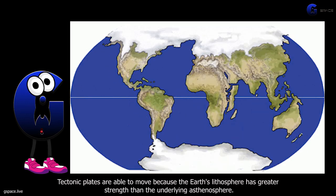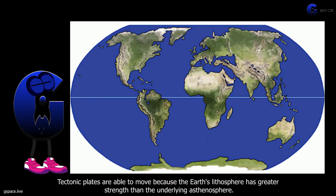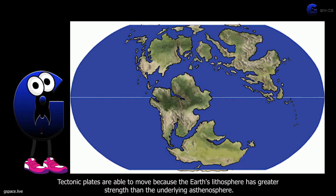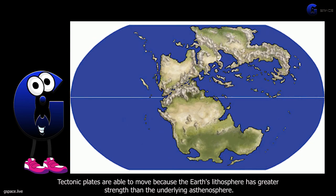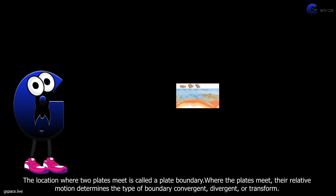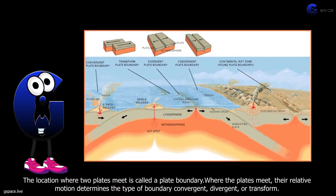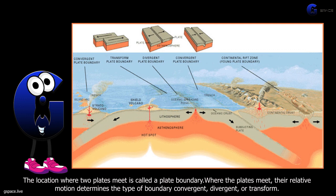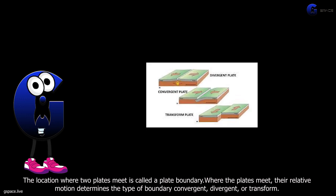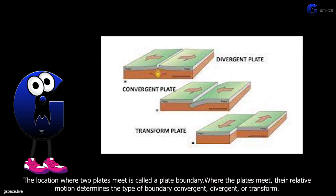Tectonic plates are able to move because the earth's lithosphere has greater strength than the underlying asthenosphere. The location where two plates meet is called a plate boundary. Where the plates meet, their relative motion determines the type of boundary.